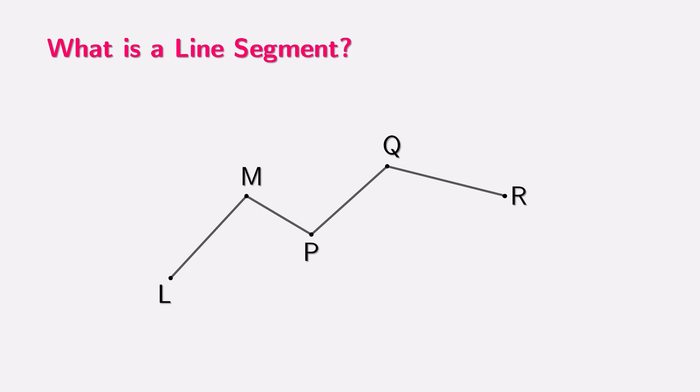Let's take a look at this figure. It consists of connected line segments starting at point L and ending at point R. The points along the path are labeled as M, P, and Q. Now let's name the line segments. The segments are LM, MP, PQ, and QR. Next, let's identify which of the five points are on exactly one line segment. Points L and R are on only one segment each, LM and QR respectively. Now which points are on two segments? Points M, P, and Q are on two segments. M lies on both LM and MP. P lies on MP and PQ, and Q lies on PQ and QR.